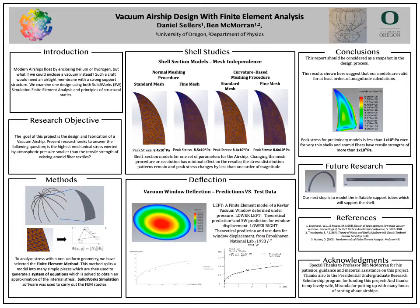This heat map under our conclusions section shows how the stress is predicted to distribute within the fabric shell. All of these models predict less than 1×10⁶ pascals, even for very thin shells. Existing aramid fibers have tensile strengths typically of more than 1×10⁹ pascals. So these are encouraging results — we would be orders of magnitude lower than the breaking stress.